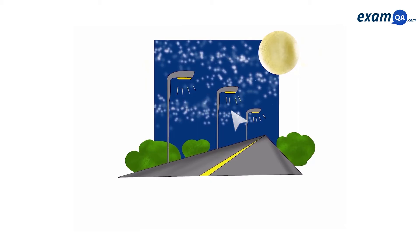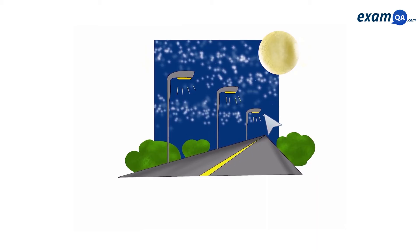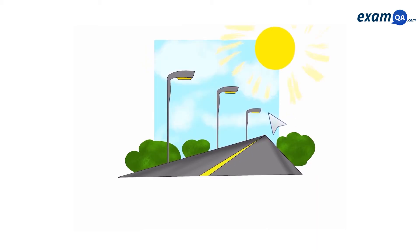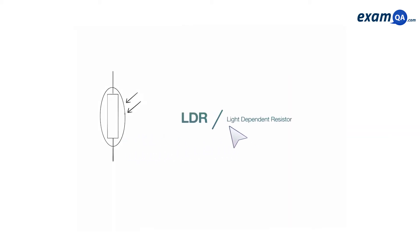There isn't a switch that turns on every single street lamp. Instead, there's a special component within the circuit of the street lamp which responds to the light intensity of the surroundings. This component then determines when it's time to turn the light bulb on or off. The name of this component is an LDR, or a light-dependent resistor.